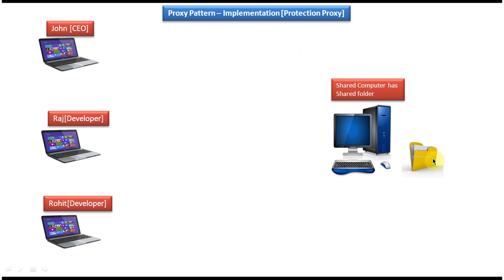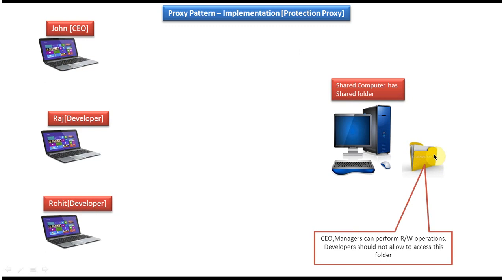On the right side you can see a shared computer which has a shared folder, and on the left side you can see the employees working in a software company. John is a CEO, Raj is a developer, and Rohit is also a developer. This shared folder contains all confidential information, so only a CEO or managers can access this folder and perform read/write operations. Developers should not be allowed to access this folder — this is the kind of protection we need to implement.